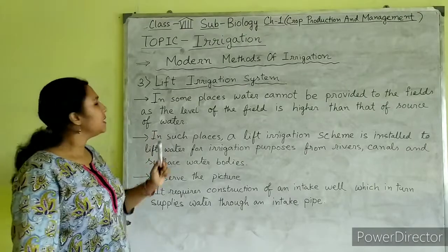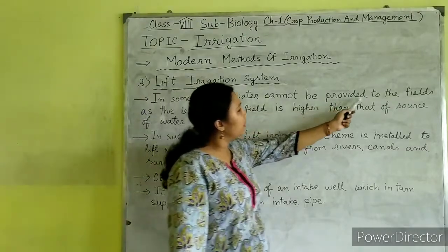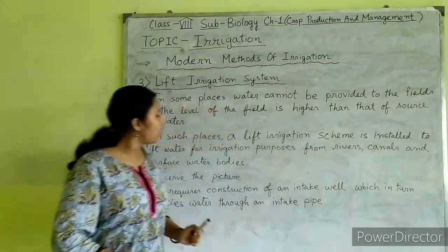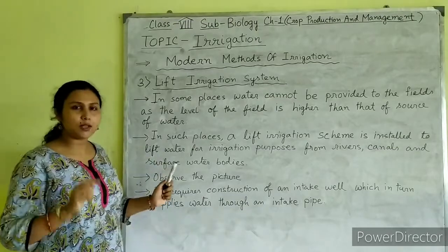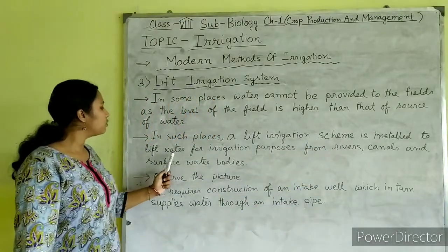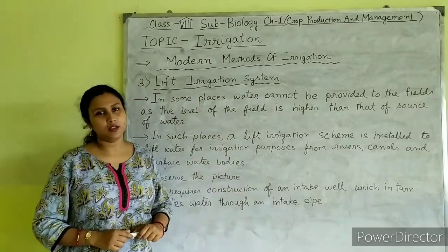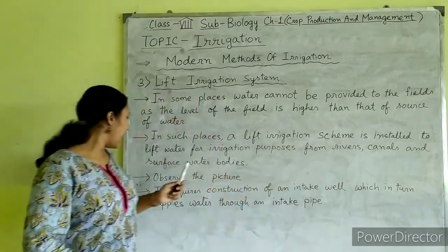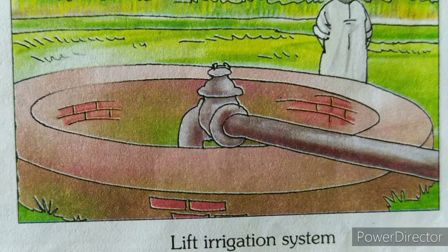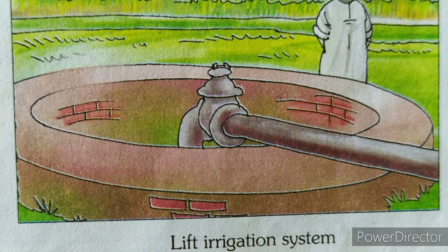The third method of modern irrigation is the lift irrigation system. Sometimes in some places water cannot be provided to the fields as the level of the field is higher than that of the source of water. In such places, a lift irrigation scheme is installed to lift water for irrigation purposes from rivers, canals and surface water points. In this picture you can observe the construction of an intake well which in turn supplies water through an intake pipe to the field.